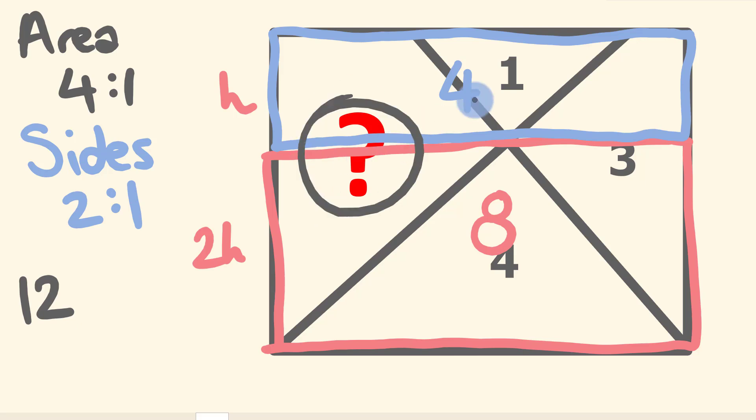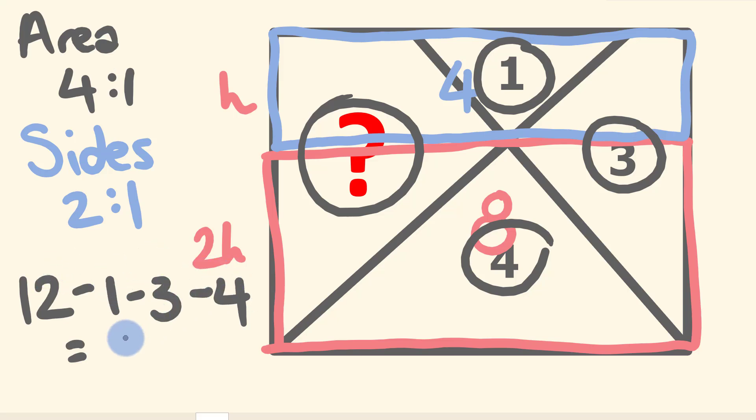To solve our unknown area here, we simply now take away our different sizes here. Minus 1, minus 3, minus 4, and it leaves us with our answer. 12 minus 1, minus 3, minus 4, is equal to 4 units squared. And that is our answer.